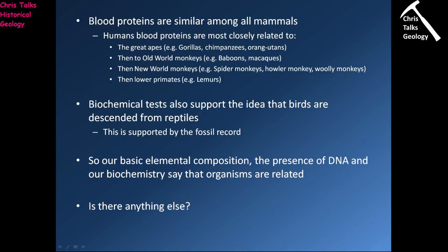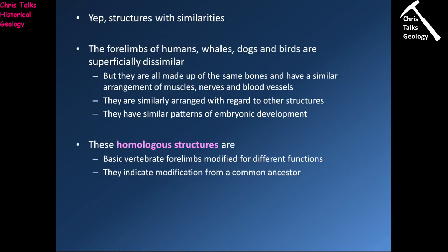Is there anything else that shows us that organisms are related to each other? Well, yes — we can look at structural similarities. Let's begin by thinking about the forelimbs — what you and I would call our arms. When we look at the forelimbs of humans, whales, dogs and birds we can see that they are very dissimilar. However, that dissimilarity is a purely superficial thing. If we actually look at the bones in the forelimbs, the way those bones are arranged, the way the muscles, nerves and blood vessels are arranged, we can actually see that human, whale, dog and bird forelimbs are quite similar.